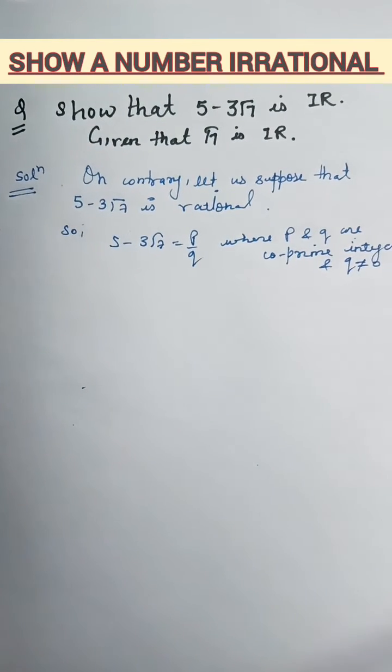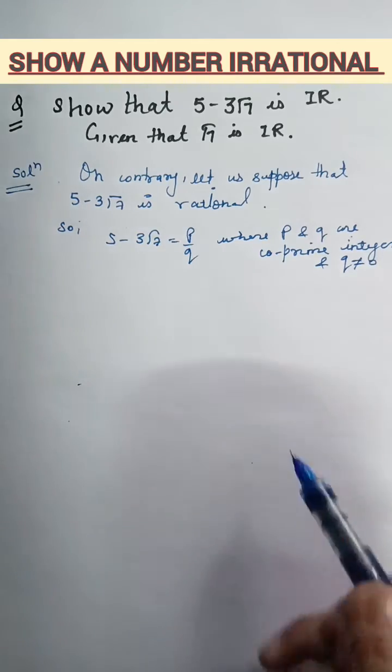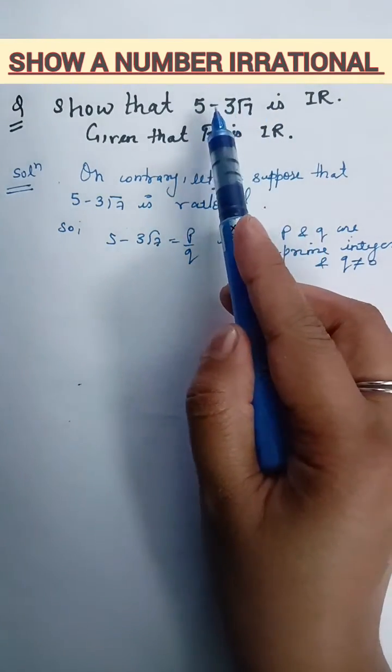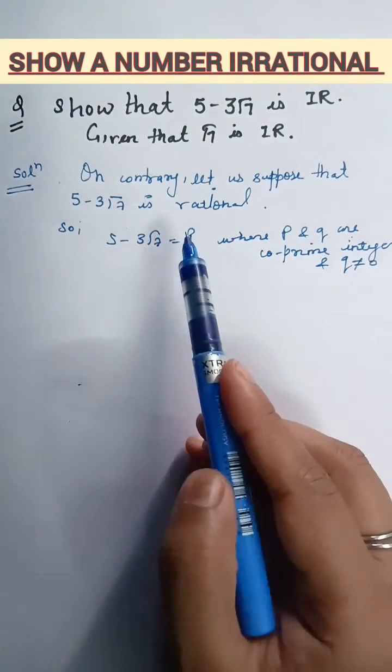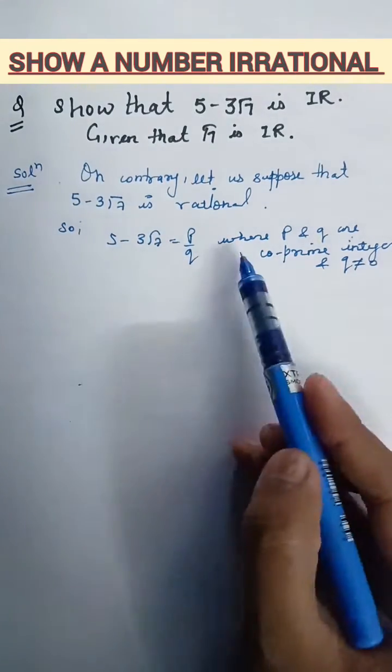So, this is the basic line of any rational number. Afterwards, what do you have to do whenever you get a group of numbers like difference, multiplication, division, first of all you will keep the complete number as p by q. Afterwards, you will shift all the numbers without root to right side.